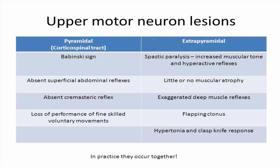Upper motor neuron lesion features: in the pyramidal system, the Babinski sign (extensor plantar response) will be positive. In the extrapyramidal system, there is spastic paralysis with increased muscle tone and hyperactive reflexes. There are absent superficial abdominal reflexes, absent cremasteric reflex, little or no muscular atrophy, exaggerated deep muscle reflexes, loss of fine skilled voluntary movements, flapping clonus, hypertonia, and a clasp-knife response.